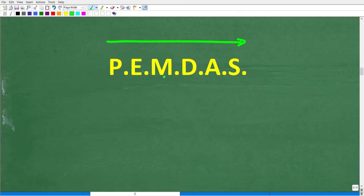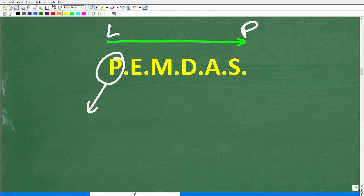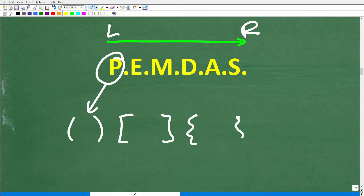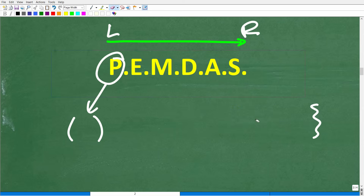So you've got to understand this little saying called PEMDAS. I'm going to give you a mnemonic — a little memory aid. It goes like this: Please Excuse My Dear Aunt Sally. I don't know what Aunt Sally did, but we thank her for her contributions to mathematics. So what is P? This is a checklist that goes from left to right. The first thing is P, which stands for parentheses — so if you see parentheses, brackets, or squiggly brackets in your math problem, you do those first. This is called grouping symbols. If you have nested parentheses, go to the innermost ones and work your way out.